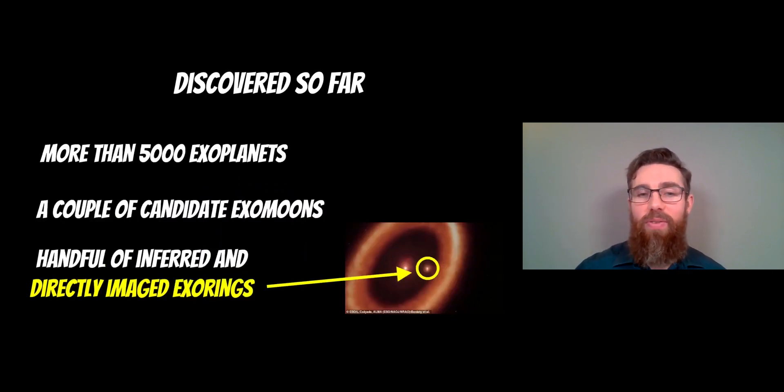Now, have we discovered any so far? Well, exoplanets, yes, we've got more than 5000 confirmed exoplanets. That's planets orbiting stars other than our sun.